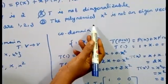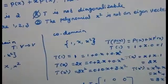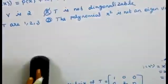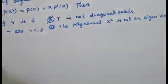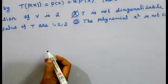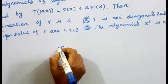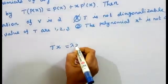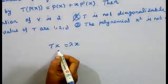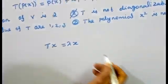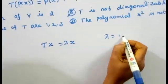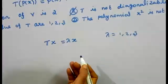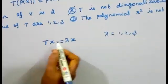Now we check the fourth option: the polynomial x² is not an eigenvector. For a linear transformation, the eigenvector condition is T(v) = λv, where λ is an eigenvalue. The eigenvalues are 1, 2, 3. We check whether x² satisfies T(x²) = λ·x² for some λ.